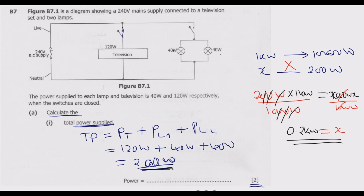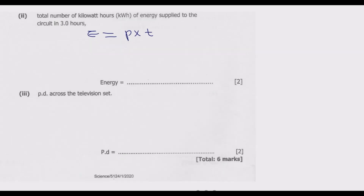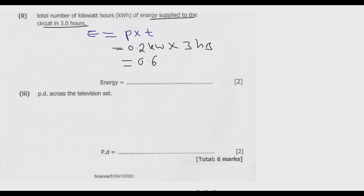Now that we know the power in kilowatts, to convert to kilowatt-hours — which is the energy supplied in three hours — we multiply the power in kilowatts (0.2 kW) by the time in hours (3 hours). We end up with 0.6 kilowatt-hours as the energy supplied to the circuit in three hours. Once you do this you will get the two marks.